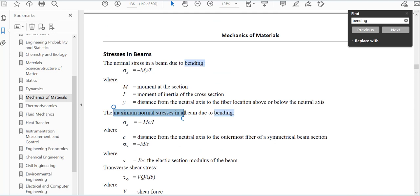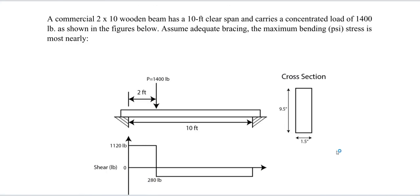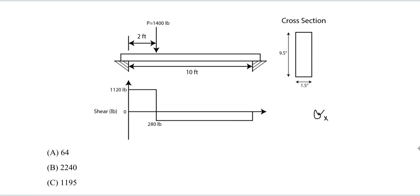It's going to be on page 136. The maximum normal stresses in a beam due to bending is arrived at by this equation. Take our moment times our C value. C is the distance from the neutral axis to the outermost fiber of a symmetrical beam cross-section. In this case, we do have a symmetrical beam cross-section. So it's just the total height divided by 2 to the outermost fiber. And I is the moment of inertia of the cross-section, the rectangle in this case. So we're going to use this equation.